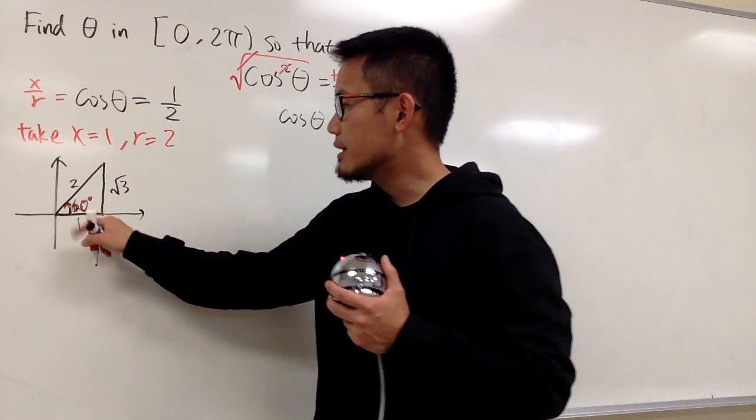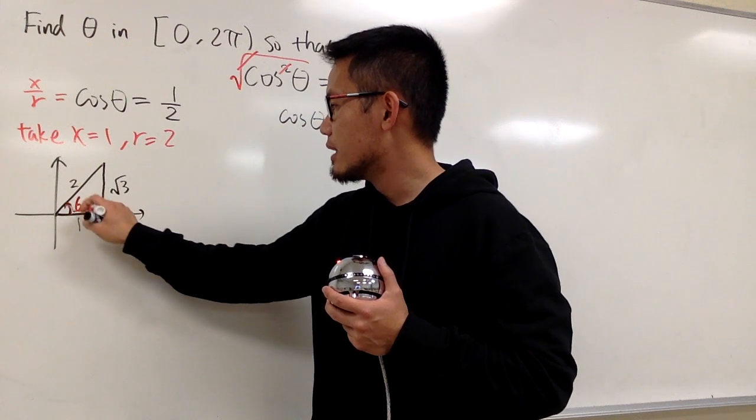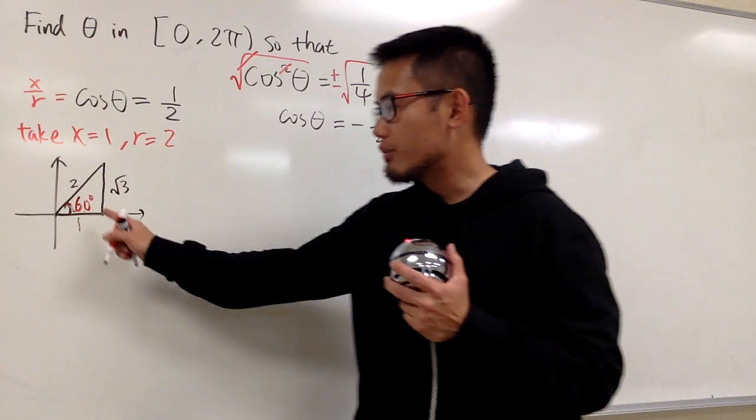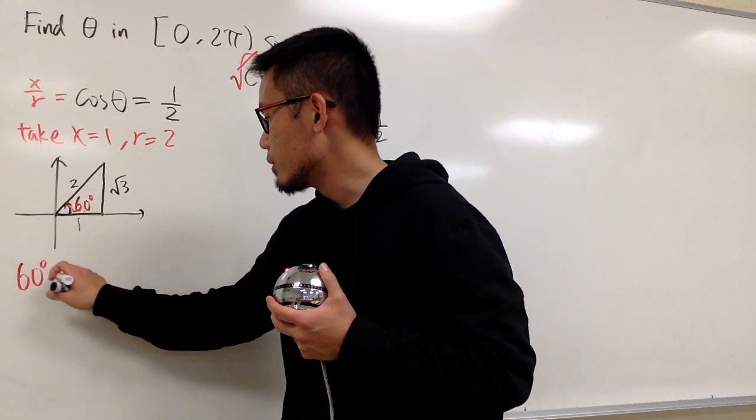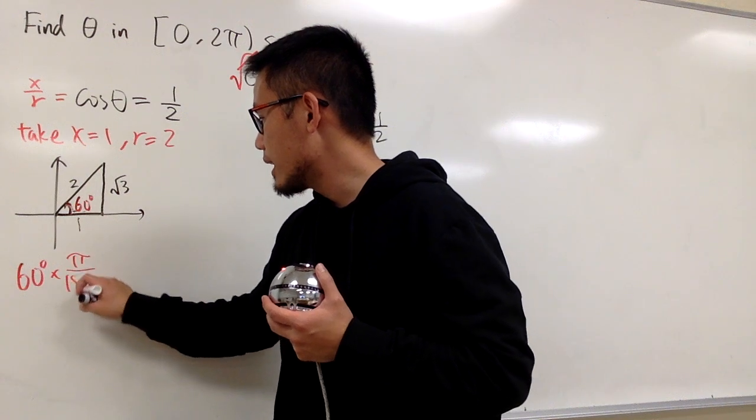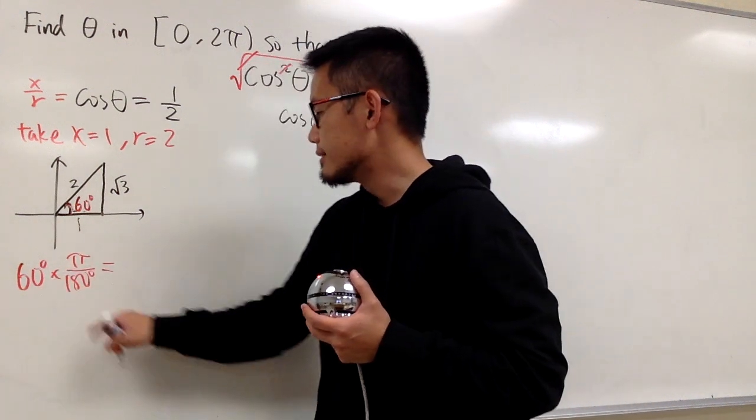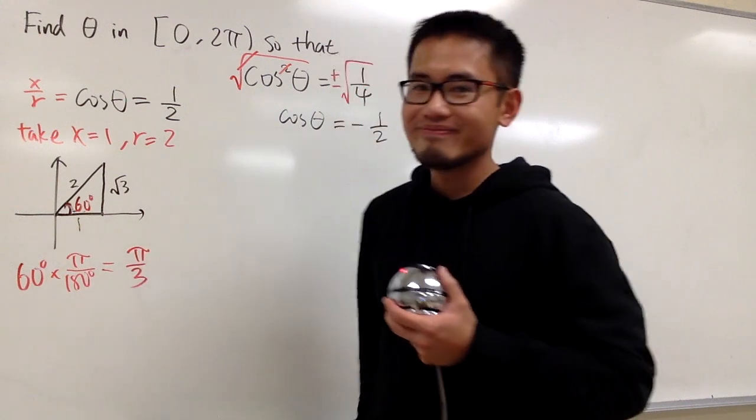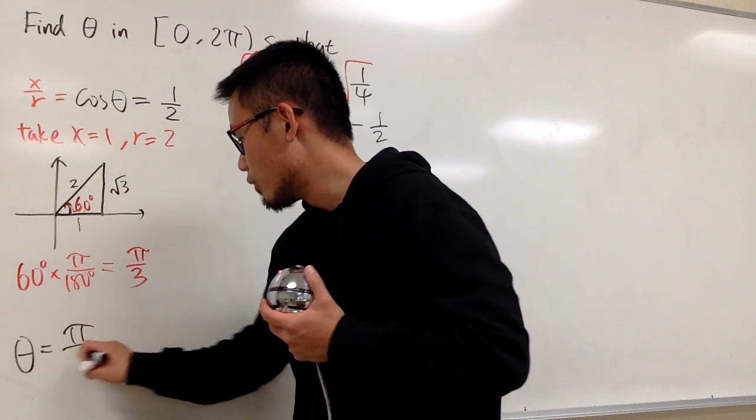The idea is that even though I put down 60 degrees here, we are using radians in the equation. So we have to convert the 60 degrees into radians. 60 degrees, we multiply by π over 180. And you can reduce. This and that, all together, you end up with 3 on the bottom, π over 3. First answer, theta equals to π over 3.